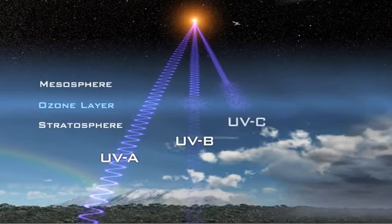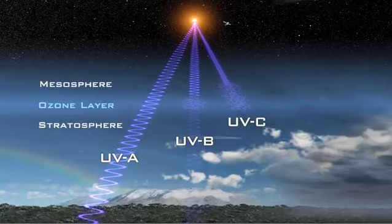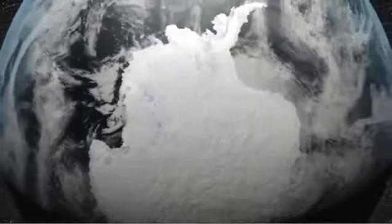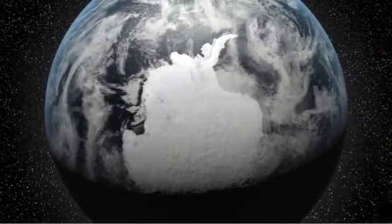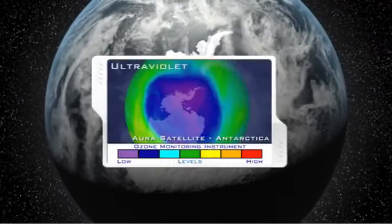UVC rays are the shortest and most harmful and are almost completely absorbed by our atmosphere. The ozone monitoring instrument aboard NASA's Aura satellite detects ultraviolet radiation to help scientists study and monitor the chemistry of our atmosphere, including UV-absorbing ozone.